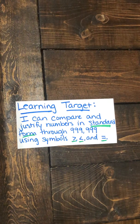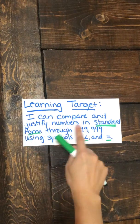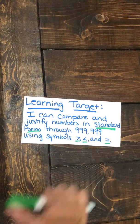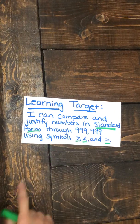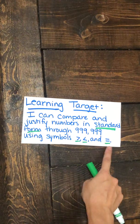Let's look at our learning target for today. It says, I can compare and justify numbers in standard form through 999,999 using the symbols greater than, less than, and equal to.